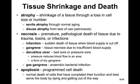Tissue shrinkage and death: atrophy is shrinkage of tissue through a loss in cell size or number. Muscles will atrophy as we don't use them. Senile atrophy occurs through normal aging, and disuse atrophy comes from lack of use — astronauts experience disuse atrophy due to lack of gravity in space. Necrosis is premature pathological death of tissue due to trauma, toxins, or infections. Many spider bites, for example, will cause necrosis — even blackening of tissue.